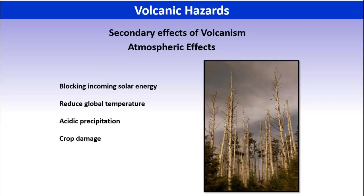Some other effects we see from volcanic eruptions include the introduction of ash. Violent eruptions, like our intermediate and felsic ones — like the Yellowstone event — if we throw a lot of material into the atmosphere, we can block out sunlight, which reduces global temperatures and gives us acid rain. All the falling ash onto the ground can bury crops and do damage to infrastructure and all those kinds of things.